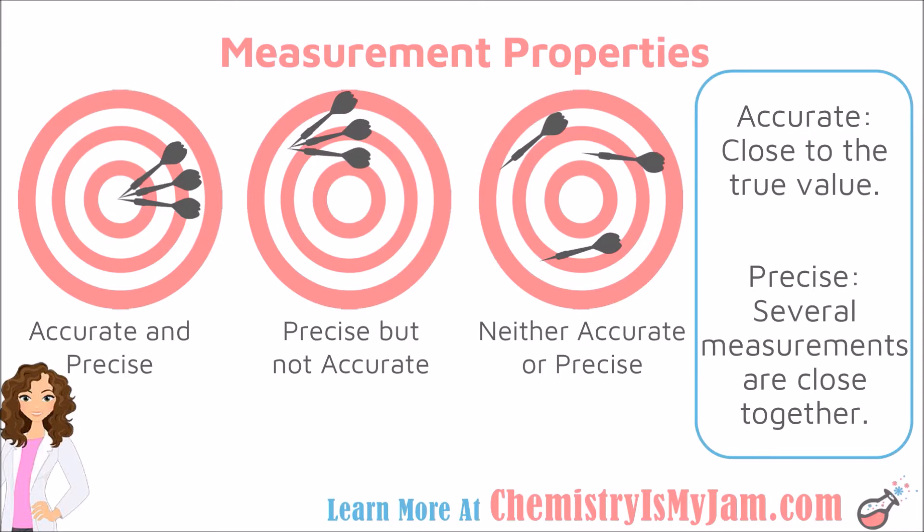Now, a measurement can be accurate and precise, accurate but not precise, or precise but not accurate. These two things do not necessarily go hand in hand.